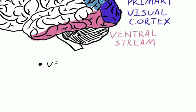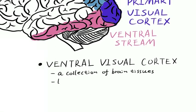In particular, the ventral visual cortex, a collection of brain tissues located across occipital, fusiform, inferior temporal, parahippocampal, and lingual regions.